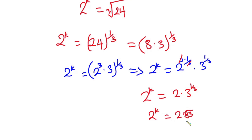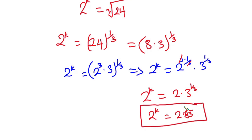So our final answer is 2^k equals 2 times the cube root of 3. I hope you found this video useful. You can also use logarithms to solve this problem, so feel free to comment below if you are able to use that approach. Thanks a lot for watching.